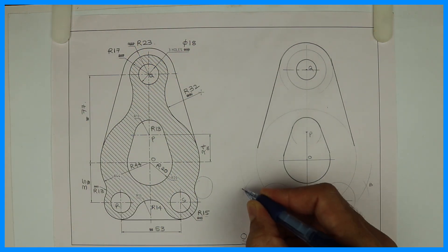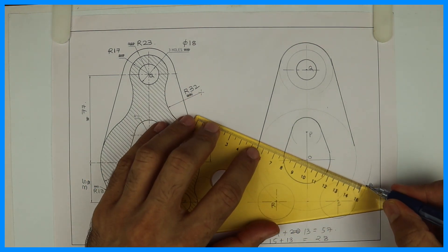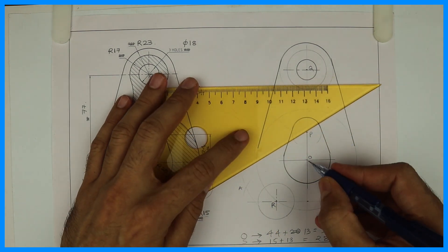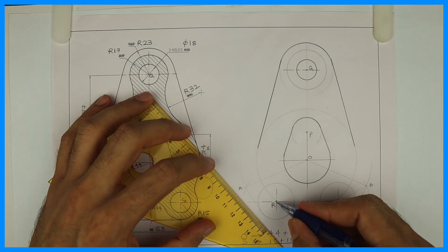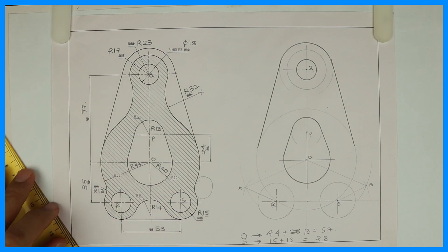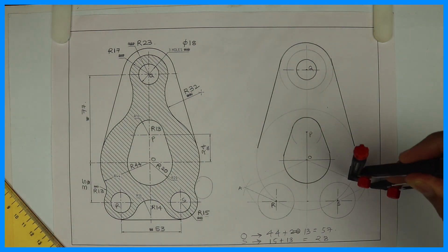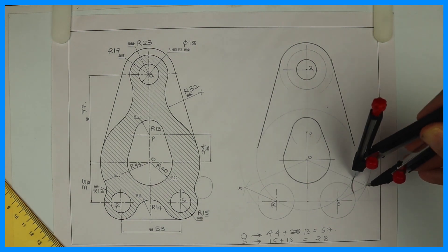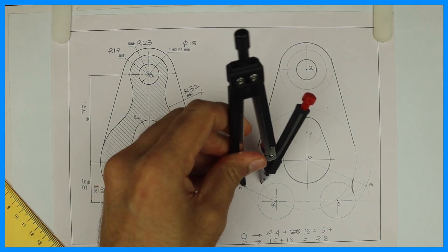So always remember, whenever it is an external circle, we need to add. Join the center point. Join these two points: B to O and B to S, O to A and A to R. Then from point B you draw curve radius 13. From point A you draw radius 13.